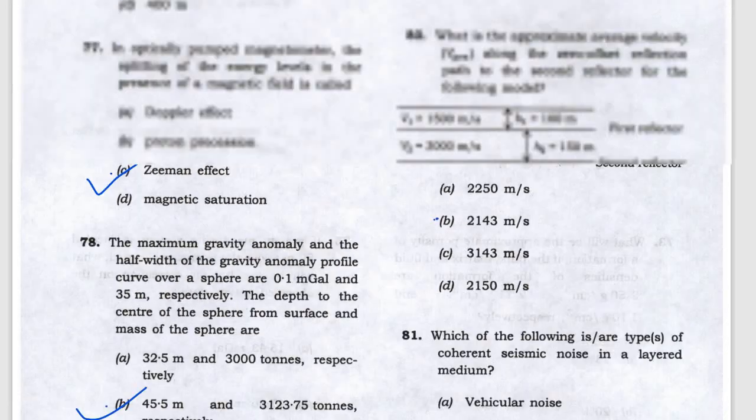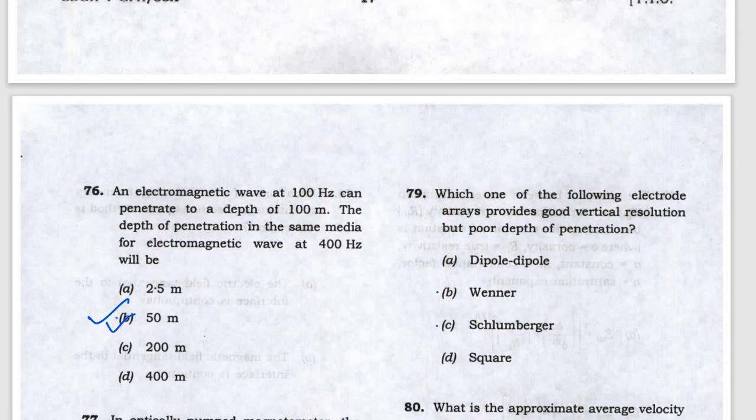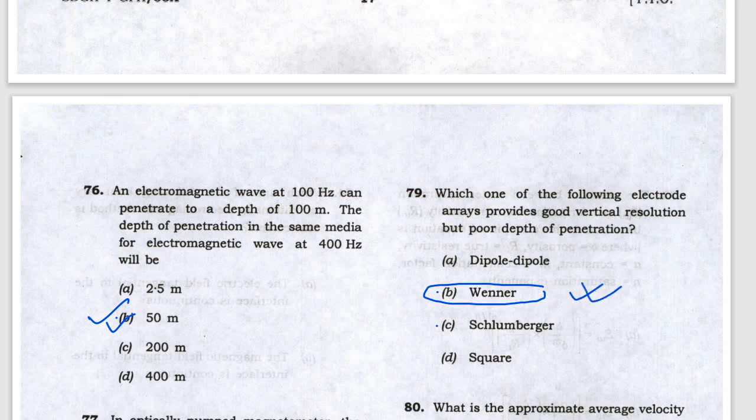Question 79 asks about the electrode array that provides good resolution but poor depth of penetration. Wenner is poor depth of penetration but good resolution, so Wenner is the most suitable answer, but it can be Schlumberger also. Wenner is most suitable.